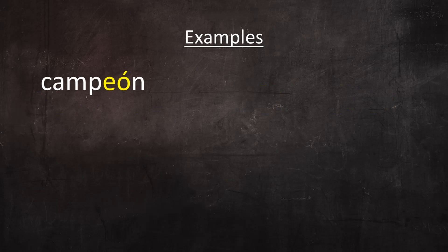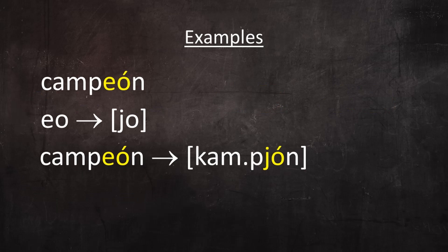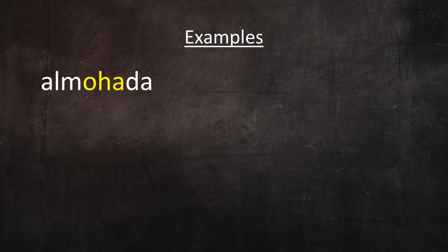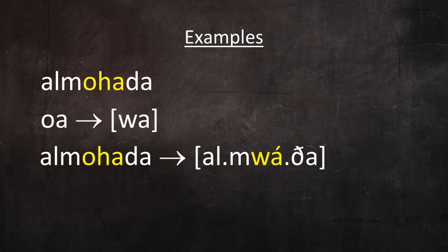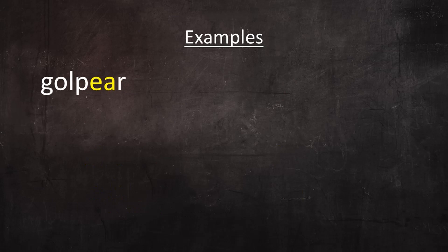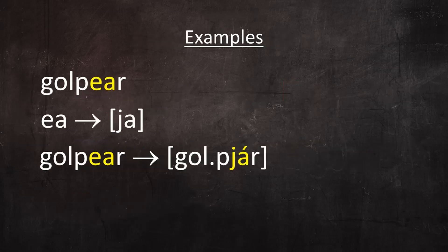The word campeón contains the hiatus EO, which could resolve to YO, so campeón may resolve to campeón. The word almohada contains the hiatus O-A, because the H is silent. That O-A could resolve to WA, so certain speakers may resolve almohada to almohada. Golpear contains the hiatus E-A, which could resolve to YA, so some speakers of some dialects may resolve golpear to golpear. In each case the resolved version is one syllable shorter.